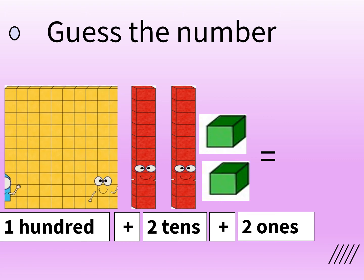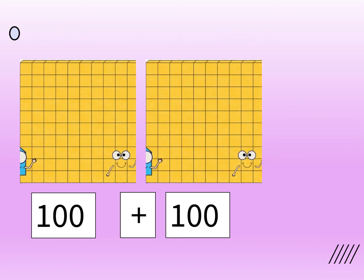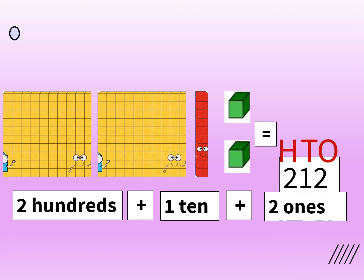Now can you guess this number? We have 1 yellow grid of 100, 2 red bars of 10s and 2 blocks of 1s. That means 100 plus 2 tens plus 2 ones is equal to 122. Now here we have 2 grids of 100, so the number is 200. Here we have 2 grids of 100, 1 red bar of 10 and 2 blocks of 1s. That means 2 hundreds plus 1 ten plus 2 ones is equal to 212.